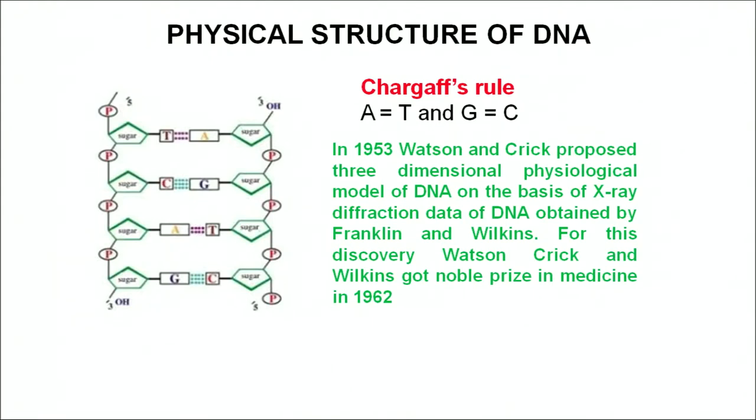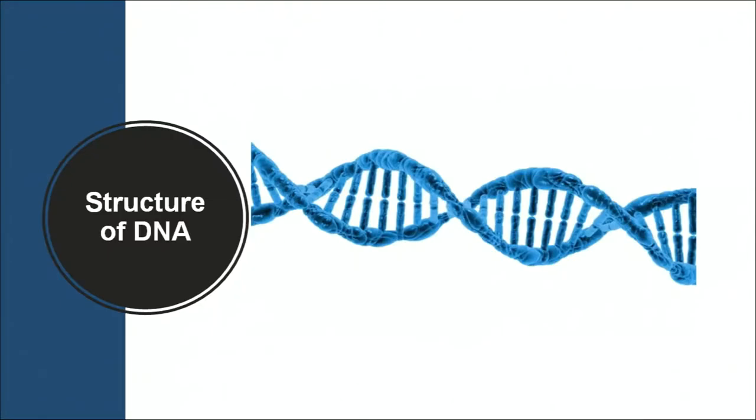The diameter of DNA is 20 nanometers. The distance between two base pairs is 0.34 nanometers, and in one complete coil of DNA, 10 base pairs can be accommodated. The length of one complete turn of the helix is 3.4 nanometers, so there are 10 base pairs per turn.